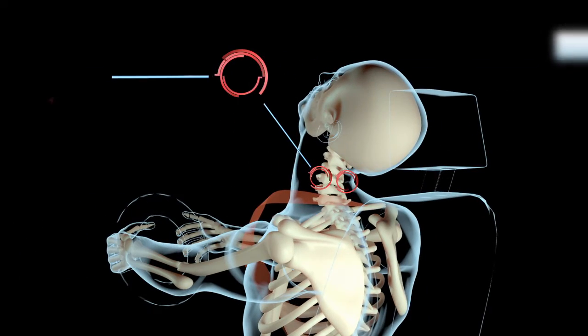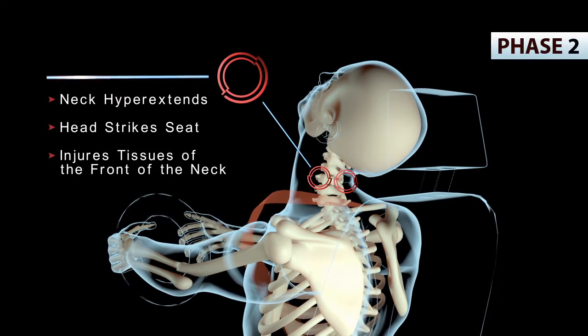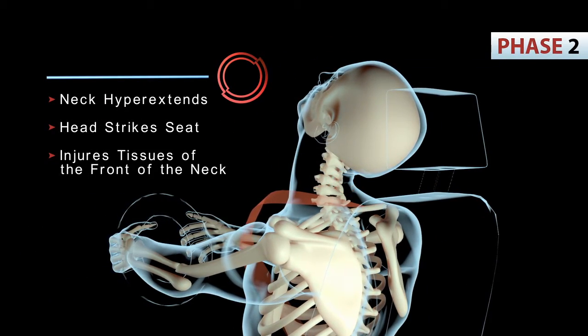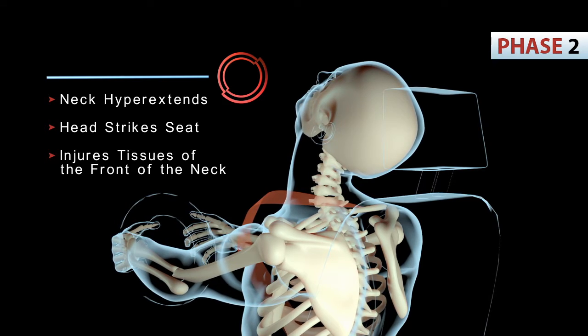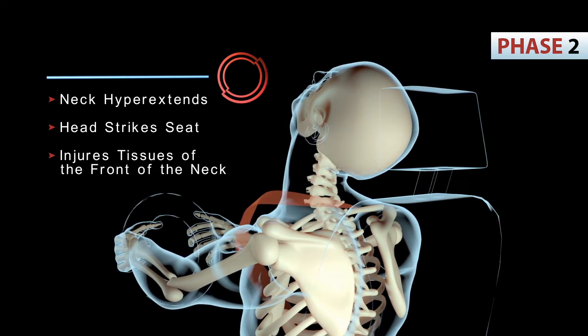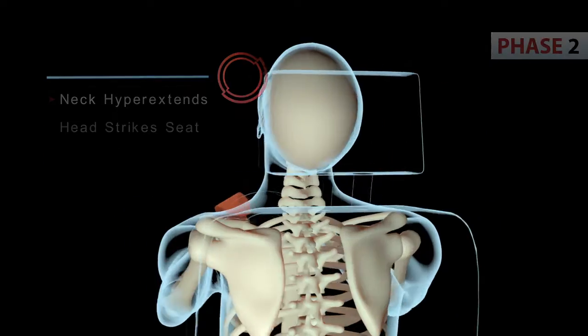In phase two, the neck hyperextends and the head strikes the seat. This causes injury to the tissues of the front of the neck.